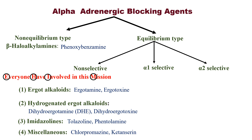Then alpha-1 selective — you can think of it as being selected for first prize. What do we do if someone is selected for first prize? We praise them. So remember: alpha-1 selective, praise them. P stands for prazosin and T stands for terazosin.